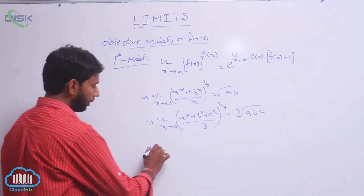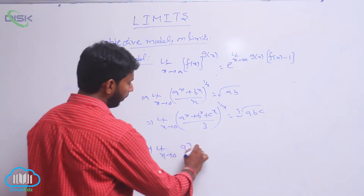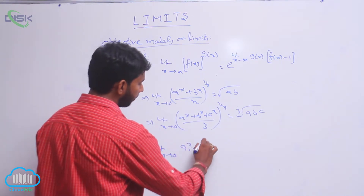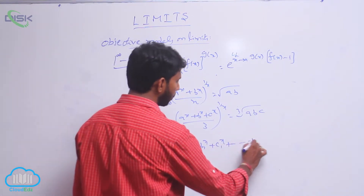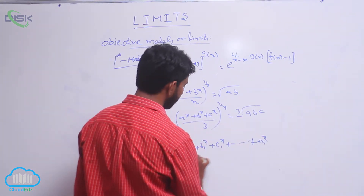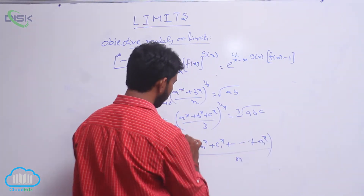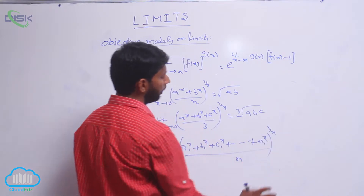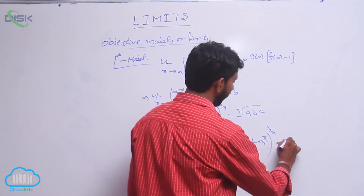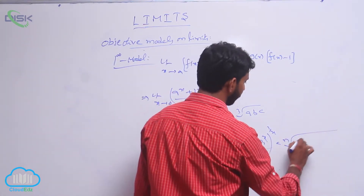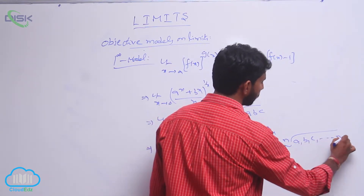Suppose there are 4 terms, it is the fourth root of abcd. In general, limit extends to 0 of [(a1^x + b1^x + c1^x + ... + n1^x)/n]^(1/x) — where there are n terms — equals the nth root of a1·b1·c1·...·n1.